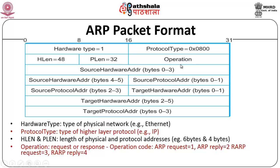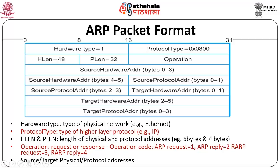In a request packet, the source hardware address and source protocol address are specified by the sender. The target hardware address is not specified — only the target protocol address is given. In the reply packet, all information is filled in. The source, target, physical, and protocol addresses are all specified within this packet format.